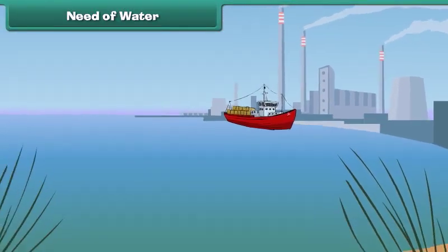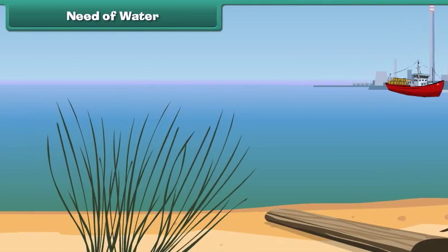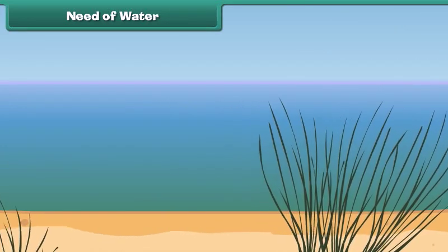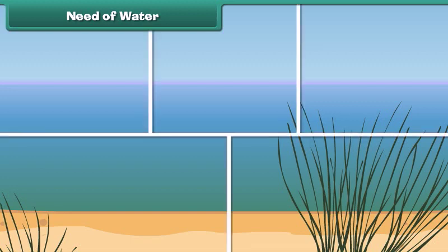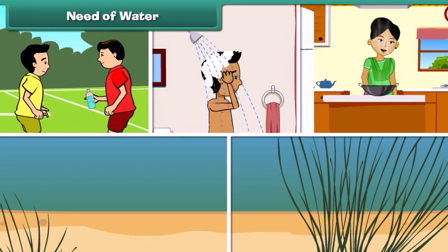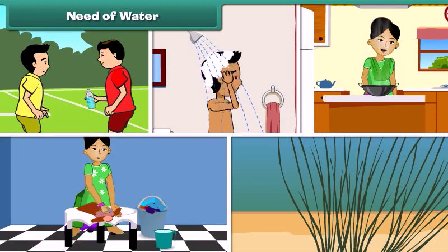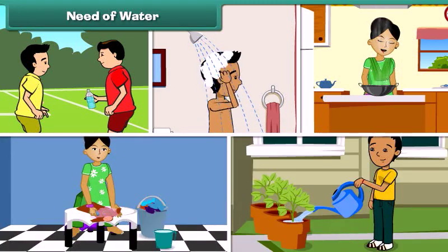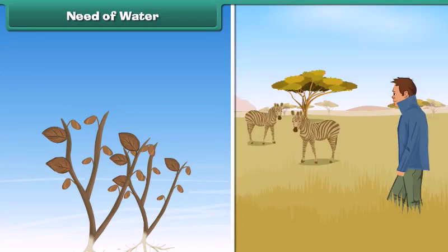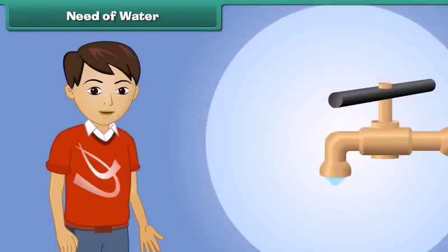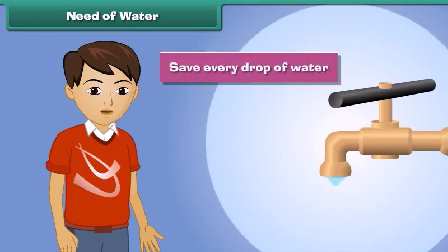We know air is very essential for our life, but did you ever wonder why water is so important? We need water to drink, to bathe, to cook, to wash our clothes, to water plants, and for so many other reasons. Without water the plants would die and people and animals would go thirsty. So children, save every drop of water and don't let it go to waste.